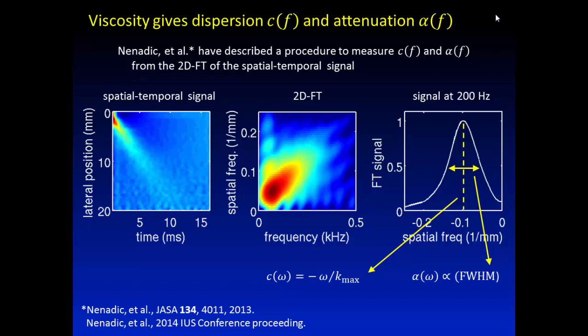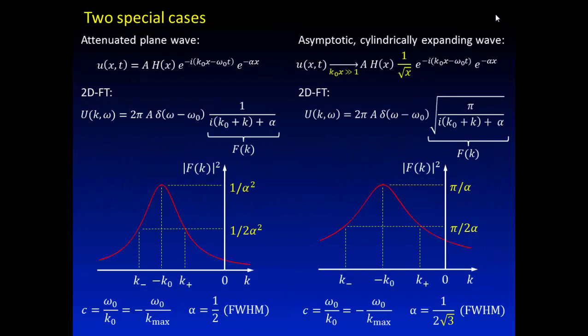So what we could do is if we look at a given discrete temporal frequency and look at the shape of that, so again, taking here a vertical projection at a given temporal frequency, in this case 200 hertz for this specific medium. What we can do is start to figure out how we can calculate phase velocities at a discrete frequency by looking at where the peak energy is, and we can make estimates of what the attenuation is as a function of the full width half maximum of this distribution. And again, this is detailed in work that's been published by other groups.